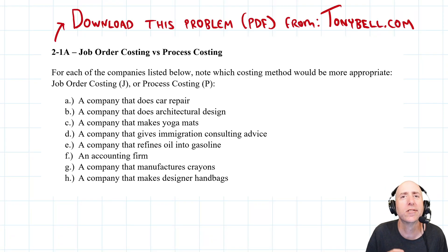Let's take a look at problem 21a: job order costing versus process costing. In our textbook, chapter two we do job order costing, chapter three we do process costing. What you'll find is they're quite different.